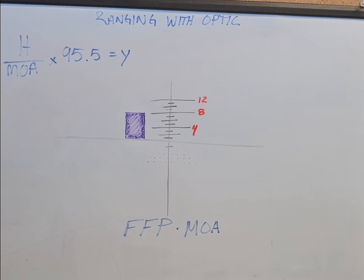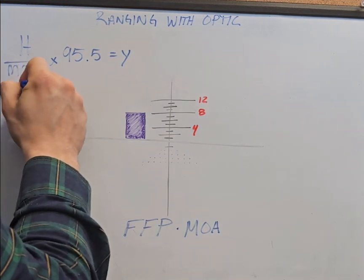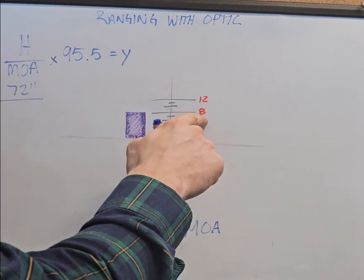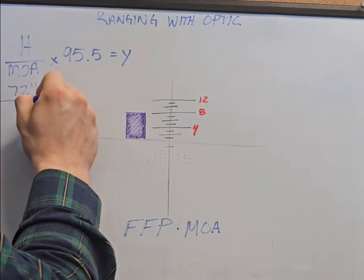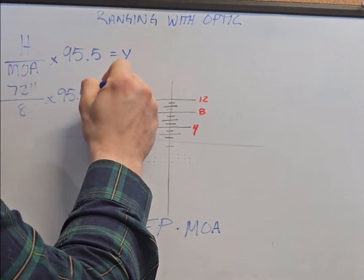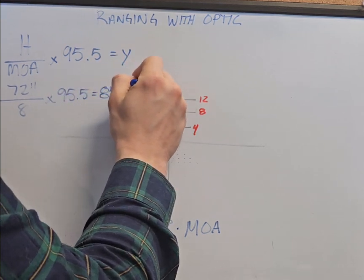So in our case our purple target is six feet tall or 72 inches tall. That's going to be 72 inches divided by eight minutes tall times 95.5 equals 859.5 yards.